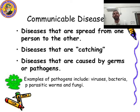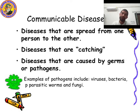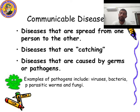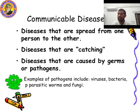Once again: communicable diseases are diseases that spread from one person to another — from an unhealthy person to a healthy person. These diseases are caused by germs or pathogens. These are actually catching diseases. Examples of pathogens: virus, bacteria, parasitic worms, and fungi.